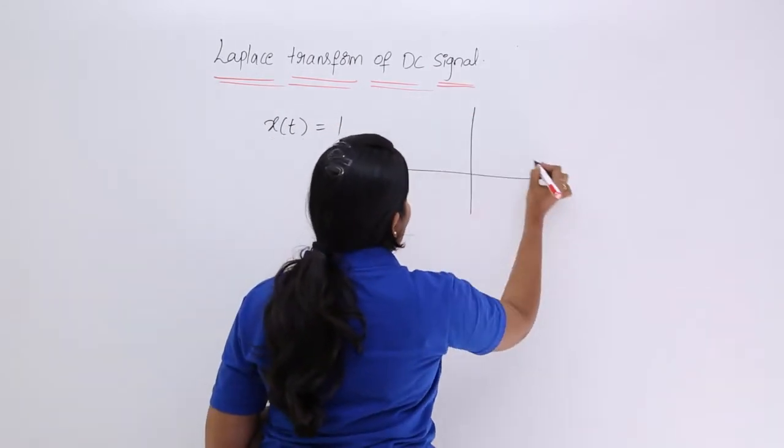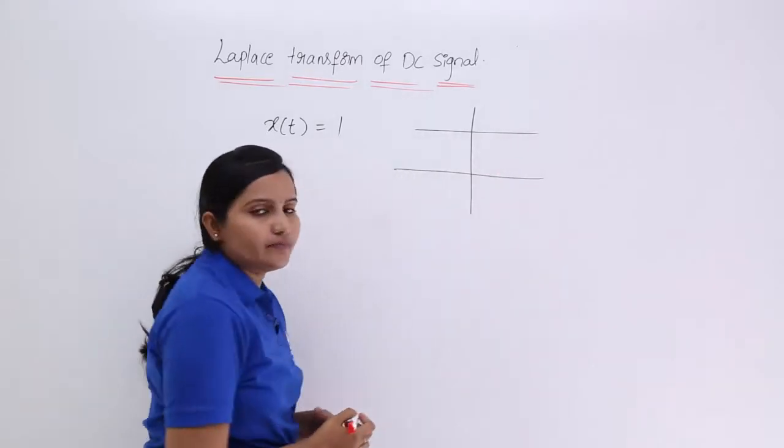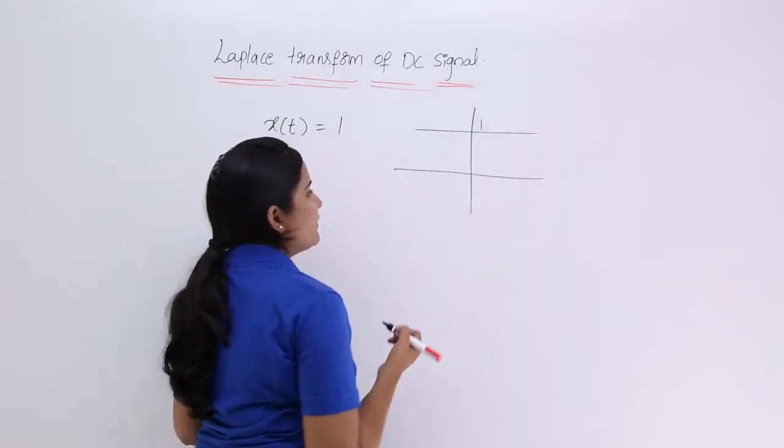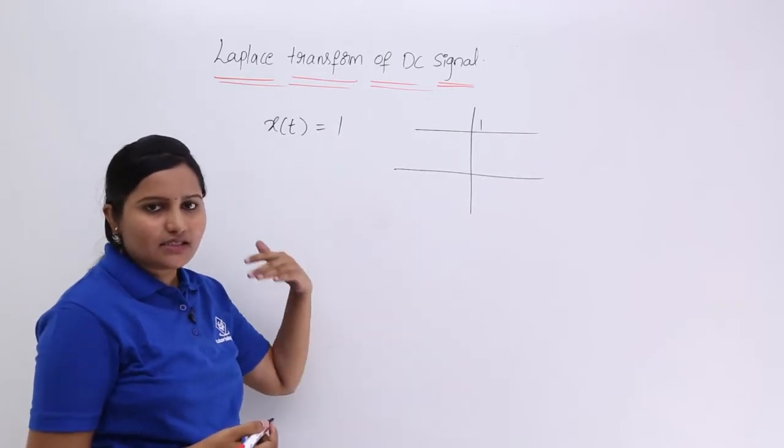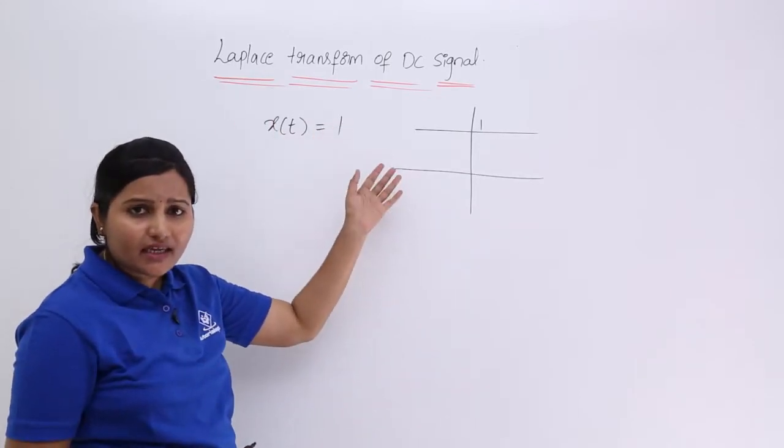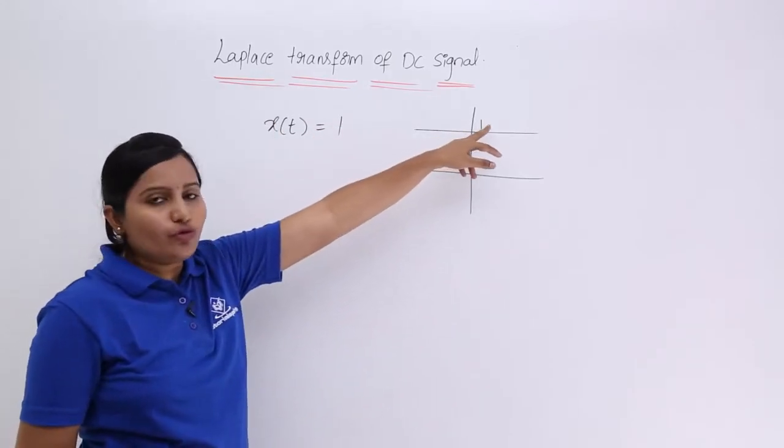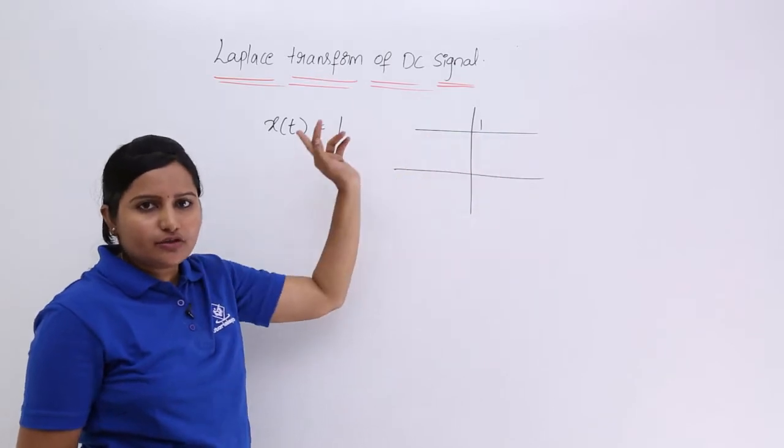This will be in the form of like this. So this is DC 1. We can apply this concept for any DC, DC 5 or 6 or A or B anything. The voltage is equivalent to that DC value.